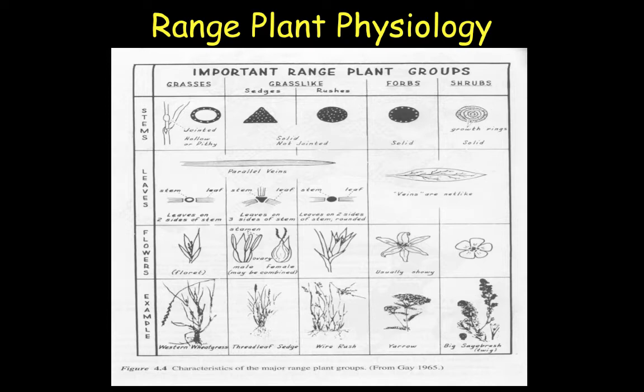So four major plant groups that we're going to be dealing with, just as a refresher, are grasses, which tend to have hollow stems. Their leaves are very long and narrow, and they have parallel veins. And they have a floret for their flower portion.